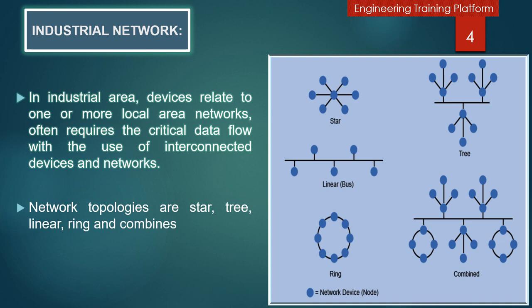Now I would like to share about the industrial network. In the picture I will explain five types of topologies: star topologies, tree topologies, linear or bus topologies, combined topologies, and ring topologies. In a star topology, the dots indicate the devices or nodes. These are the central or main devices, and all other devices connect with the main device.